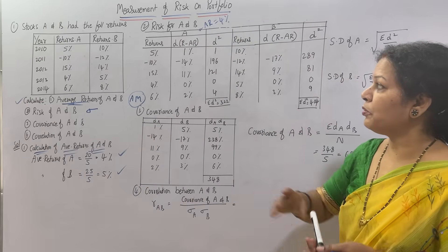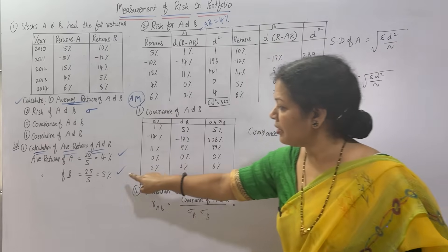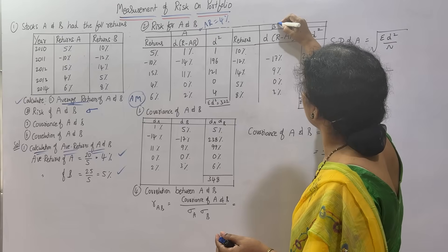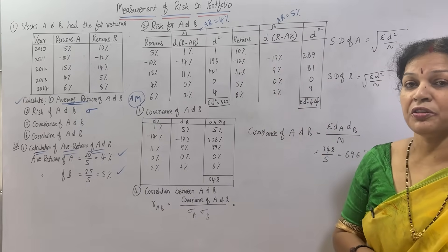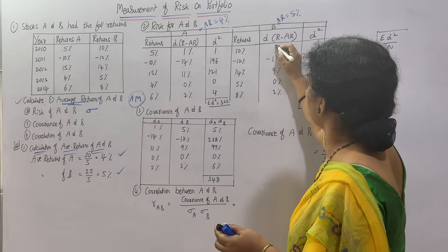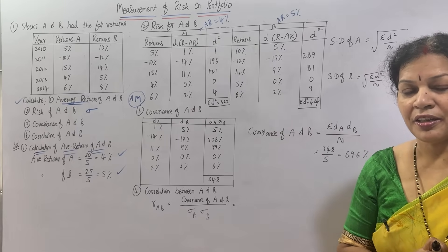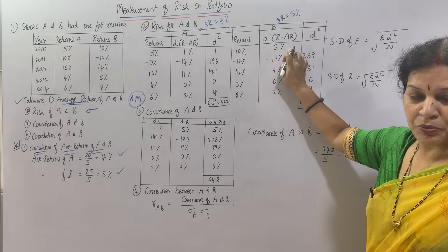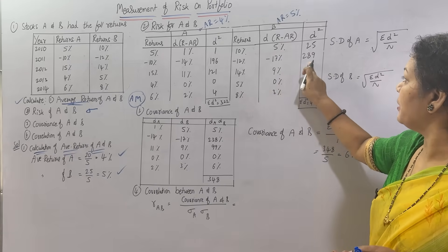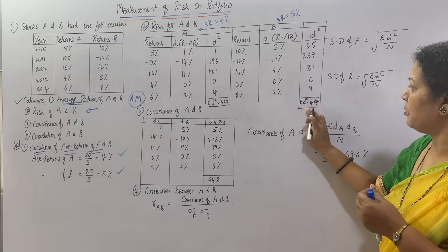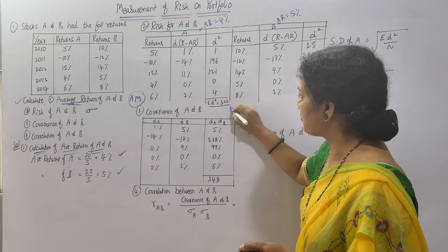In the same way for Stock B: returns written as-is, then D = R minus AR, where AR is 5%. First observation: 10 minus 5 = 5%. Then minus 12 minus 5 = minus 17, and so on. D-squared: 5×5 = 25; 17×17 = 289 — and so on. The total sigma D-squared for Stock B is 404.